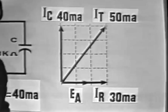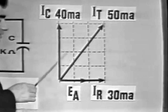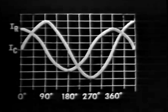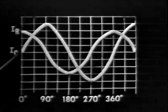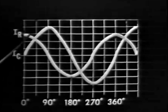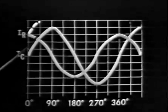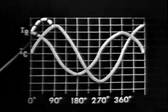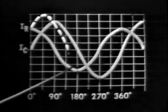The reason these two currents cannot be added together is because they don't occur at the same time — IC and IR are 90 degrees apart. Plotting the waveforms, the resultant current is greater than either branch current but less than the mathematical sum. For example, at zero degrees IC is zero and IR is 30 milliamps, so the circuit current is 30 milliamps. At 45 degrees, IR is about 25 milliamps and IC about 25 milliamps, giving a resultant of 50 milliamps. At 90 degrees, IR is zero and IC is 40 milliamps.